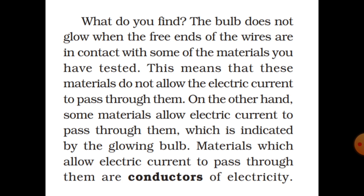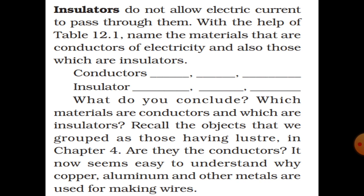When the bulb does not glow when the free ends of the wire are in contact with some materials, it means those materials do not allow electric current to pass through them. When the bulb glows, it means those materials allow electric current to pass through them. Materials that allow electric current to pass through them are called conductors of electricity. What do you conclude — which materials are conductors and which are insulators?